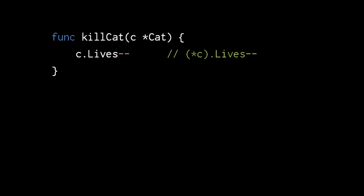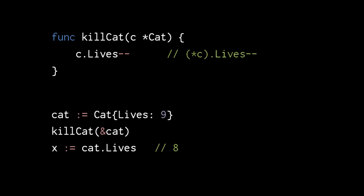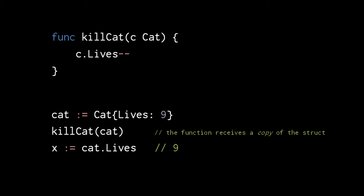Likewise, if a function receives a pointer to a struct, we can modify the values of the pointed-to struct in our function. A special thing about pointers to structs is that we can access the fields of a pointed-to struct with an implicit dereference. Here, where we decrement c.lives, c is a cat pointer rather than an actual cat, but Go is implicitly dereferencing c. We could make the dereference explicit ourselves, but the usual style is to leave it implicit. In any case, if we create a cat variable and pass a pointer to the cat to the function, the lives field of the cat gets decremented by 1. If instead our function received a plain cat rather than a cat pointer, then the parameter would receive a copy of the cat and so would only be modifying its own copy.